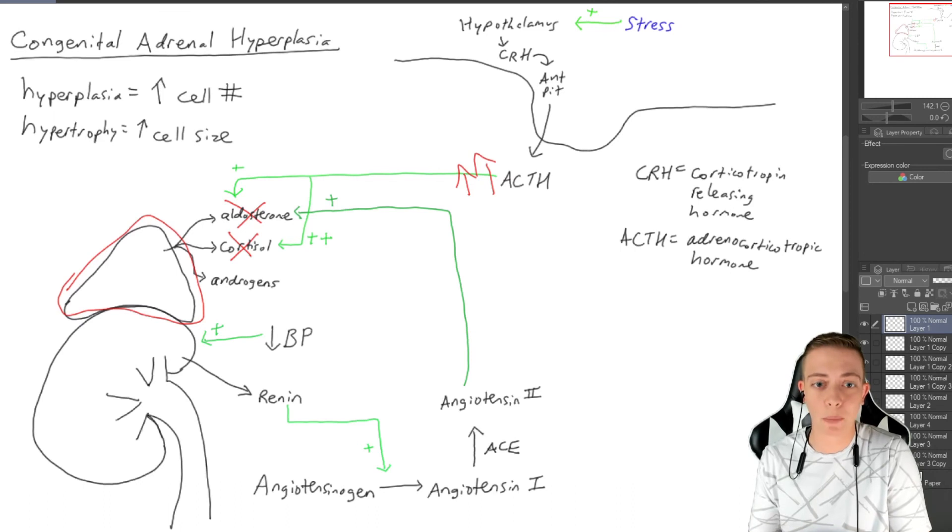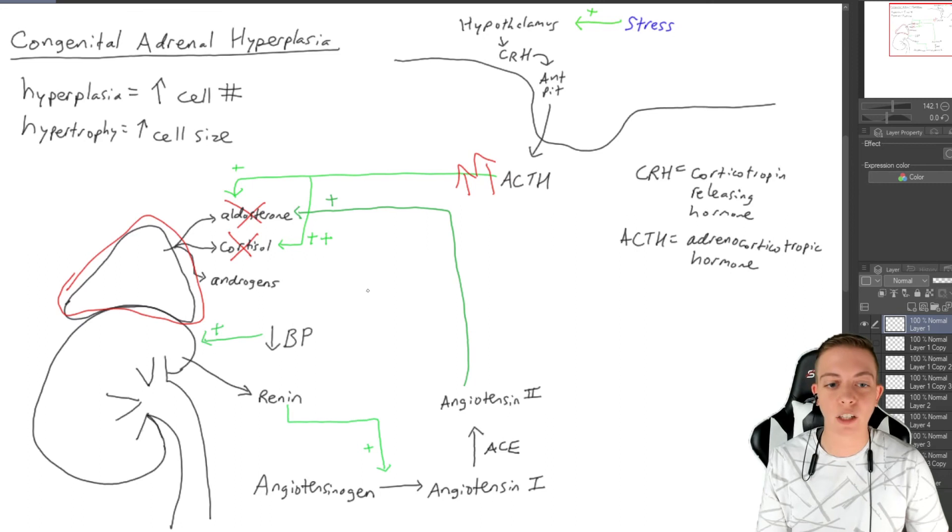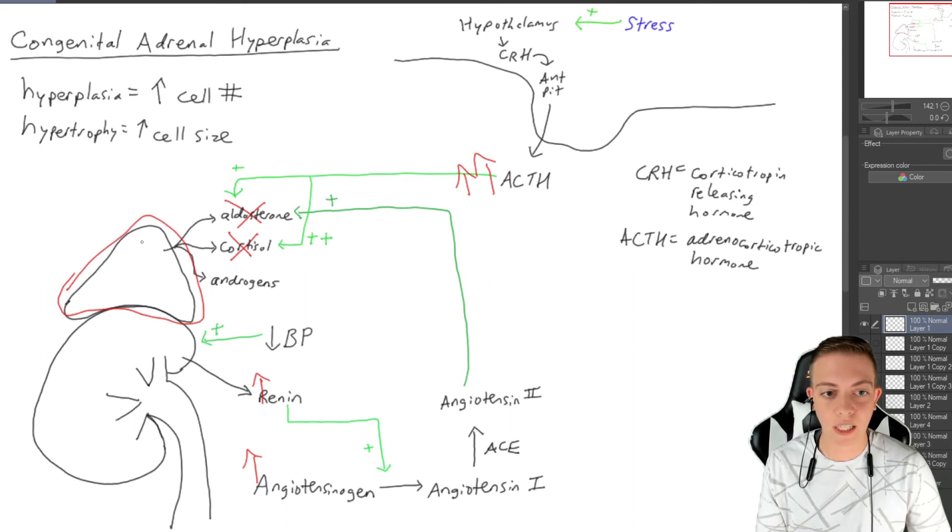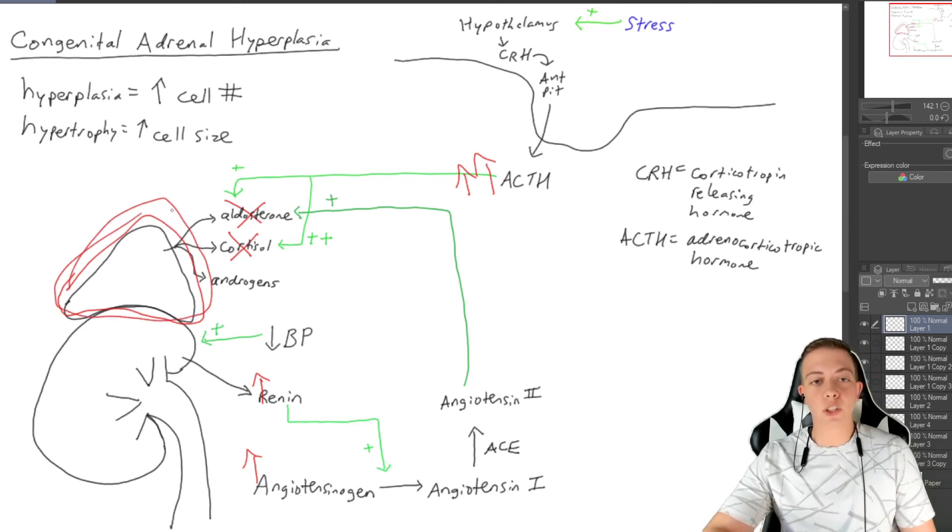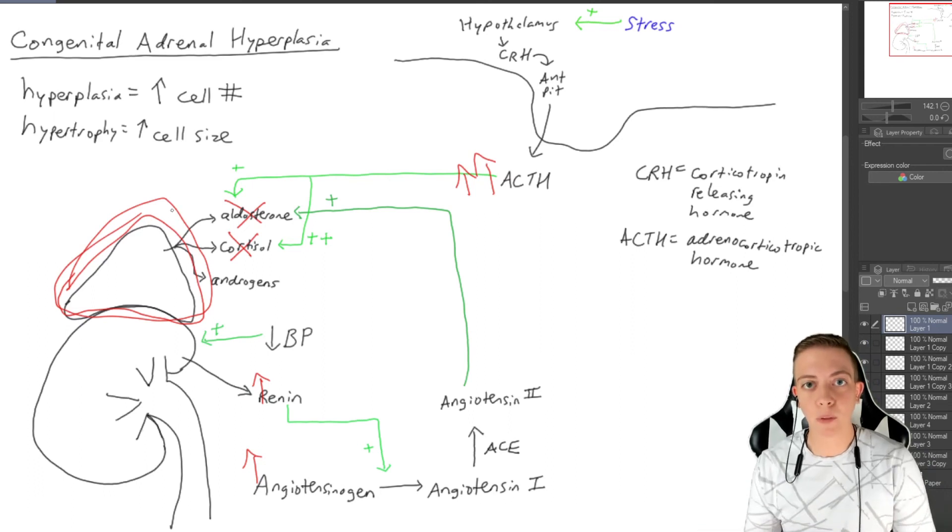Now the kidney is going to think that we don't have enough fluid in our body to increase our blood pressure, so this is just going to keep becoming this vicious cycle. We're just going to keep increasing renin, we're going to keep increasing everything down here, and we're going to keep growing this adrenal gland. This is where it kind of becomes a problem.